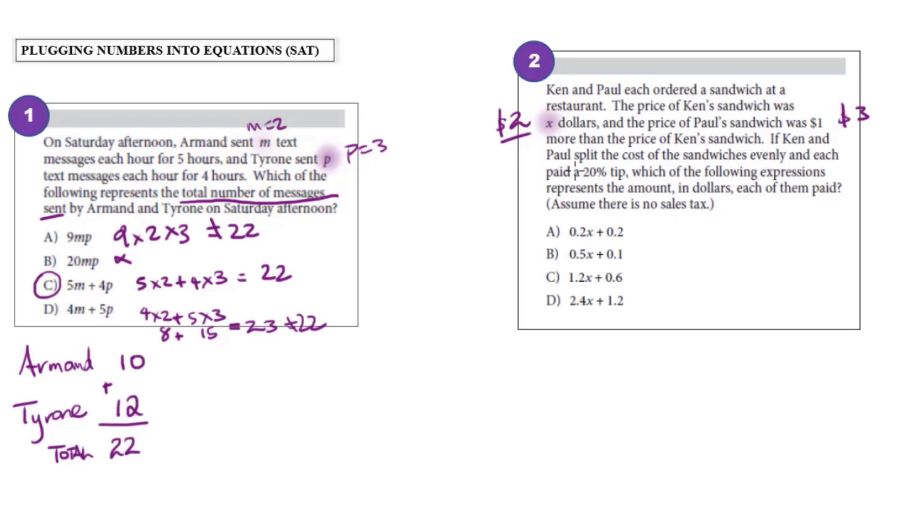If Ken and Paul split the cost of sandwiches evenly and each paid a 20% tip, if we think about what that means, it means that overall, now we would have the money together, which would be $2 and $3. So that's five. And if each of them paid a 20% tip, that means 20% would have come out of the whole total. So it would be 20% of five.